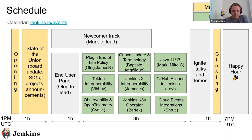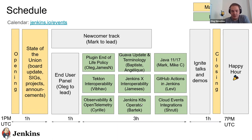We'll have a pretty long conference where we will talk about topics which we discussed before the summit in the community. There was a Google Doc where everyone was able to contribute, and we agreed we will have three parallel sessions. The topics include interoperability, Jenkins X, GitHub Actions in Jenkins, cloud integrations, open telemetry and observability — all related to other projects. We will also have a discussion about the core Jenkins and its evolution: plugin end of life policy, updating terminology, updating the Jenkins core, Java 11 and 17. And we have a discussion about Jenkins Kubernetes operator, which is a new sub-project to join Jenkins.